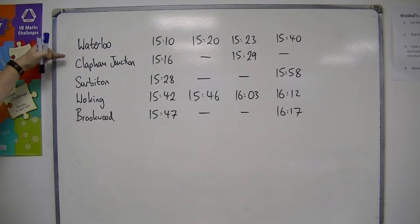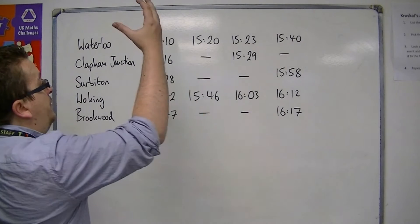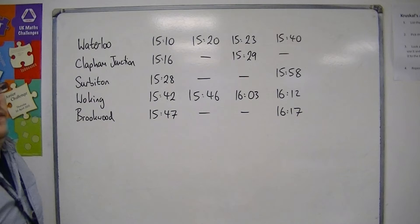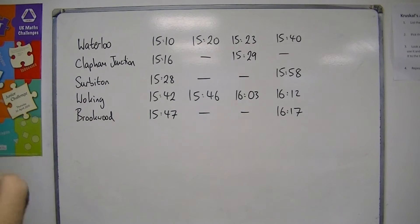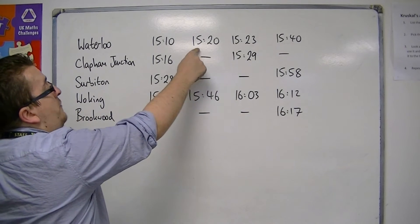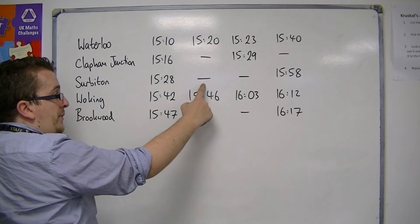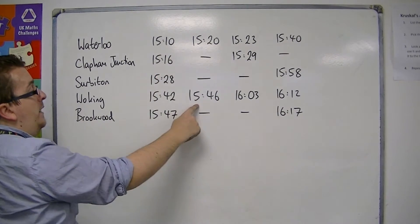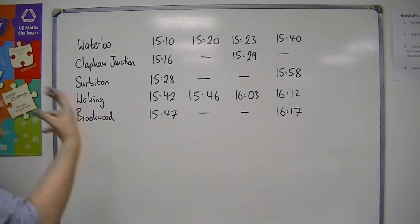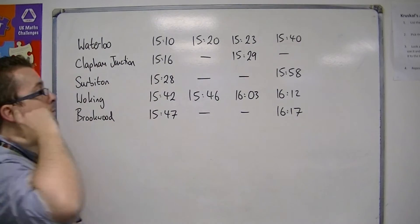We have Waterloo, Clapham Junction, Surbiton, Woking and Brookwood, and we've got the times that the trains leave Waterloo and the times that they arrive at their destinations. You will see that some of these are blank. This means that the 3:20 from Waterloo is not going to be stopping at Clapham Junction or Surbiton. In fact, its next stop after Waterloo is Woking at 3:46. This is how you read a timetable by working downwards in this case.